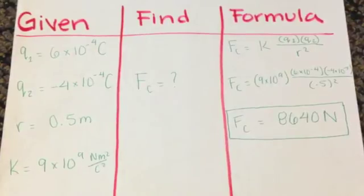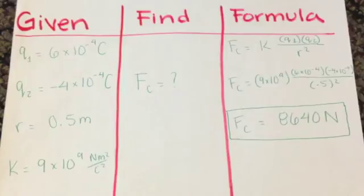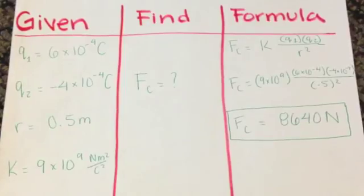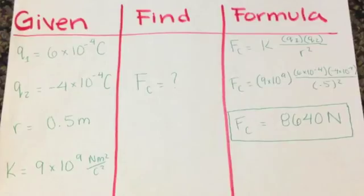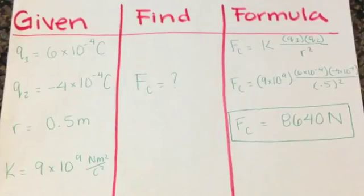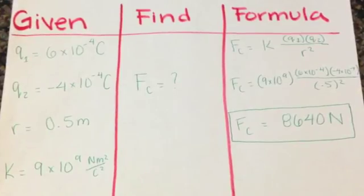To find force, first we multiply q1 times q2, then we divide that by r squared. Finally, we multiply that number by the k constant in order to find F.